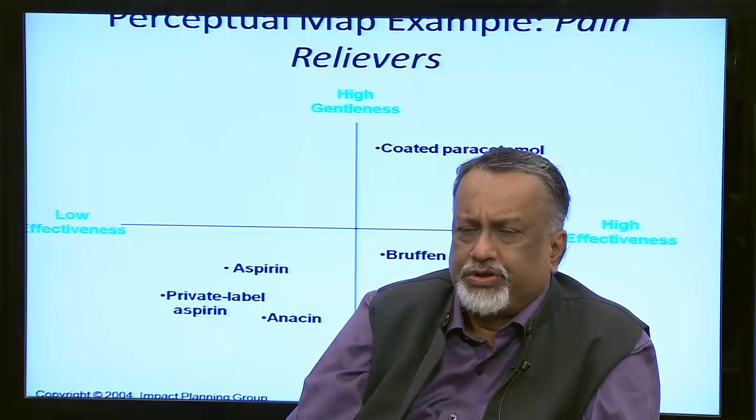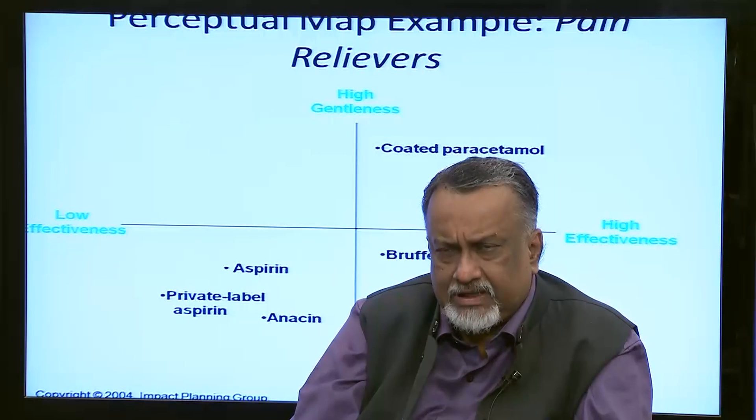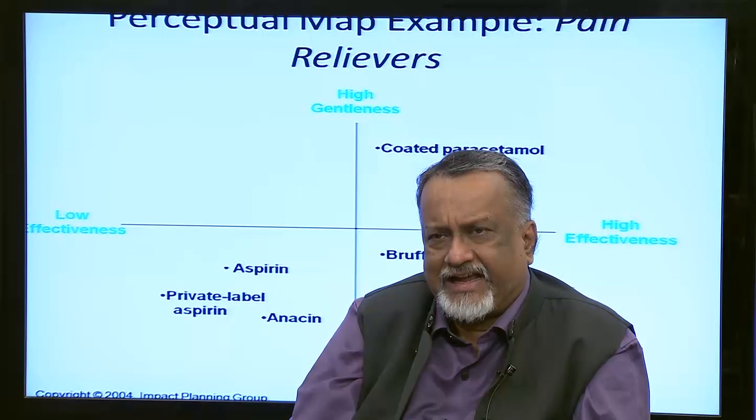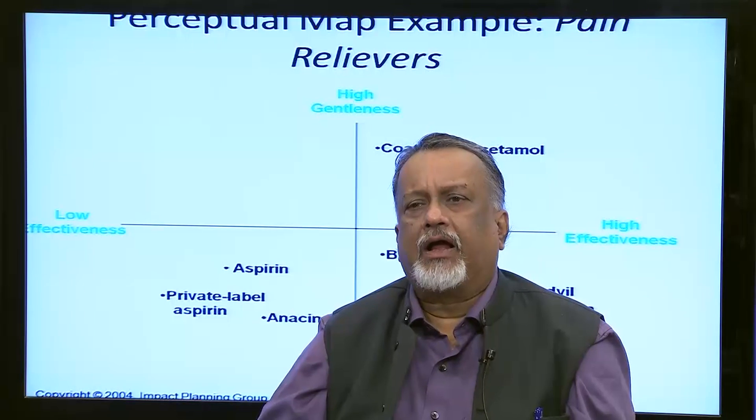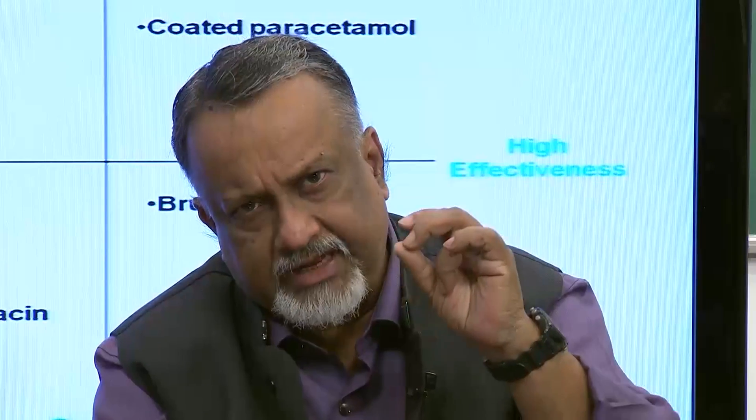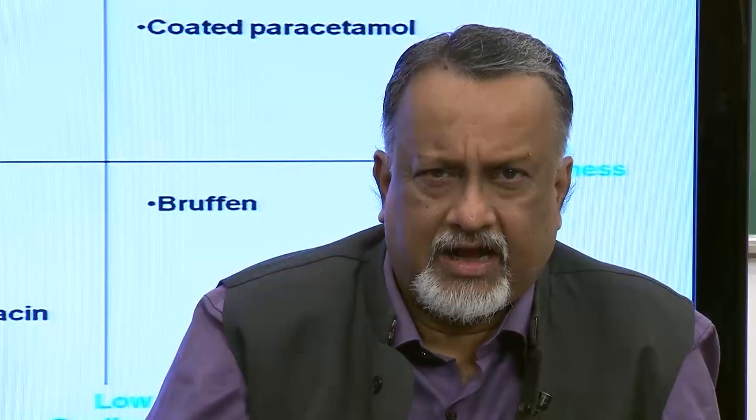One example introduces a new term: the perceptual map. The perceptual map is another kind of composite segmentation where we take orthogonal properties that determine customers' buying choices, and create different positions for existing products to identify gaps where we can position our new offering. This is a kind of segmentation which is slightly different from what we have been discussing. Instead of treating each factor independently, here we are treating two factors together and determining a composite position.